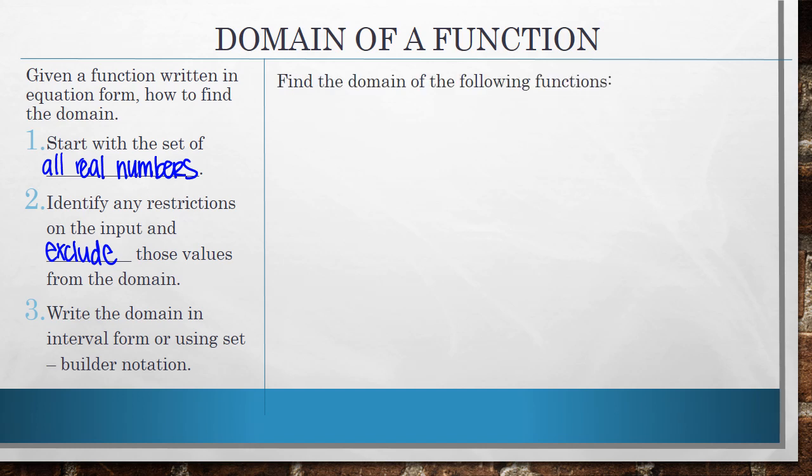So if we were asked to find the domain of the following functions, f(x) equals the square root of 7 minus 2x. Following our steps. Step 1, start with the set of all real numbers. Step 2, identify any restrictions on the input and exclude those values from the domain. So looking at this function, it's the square root function.